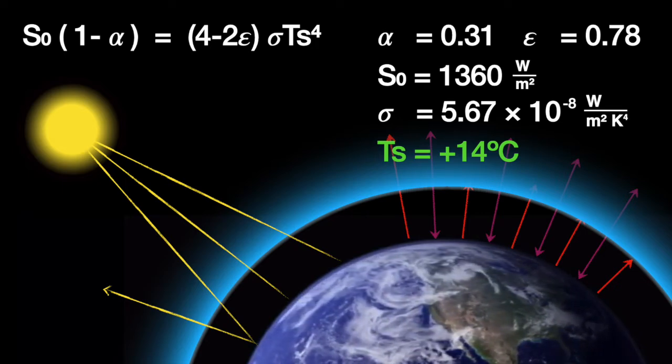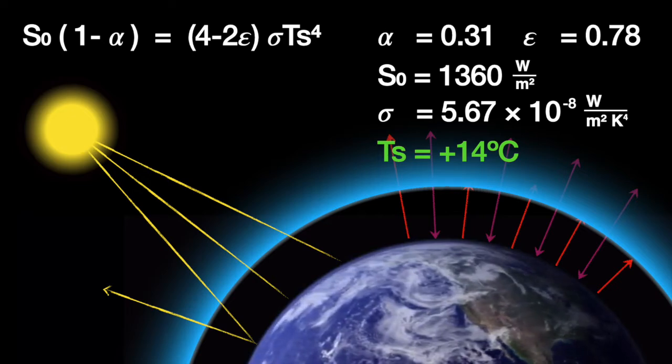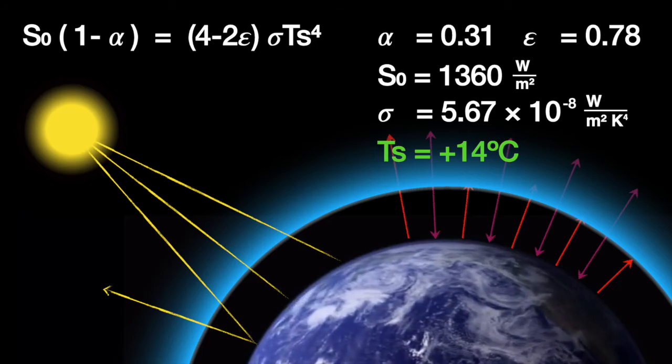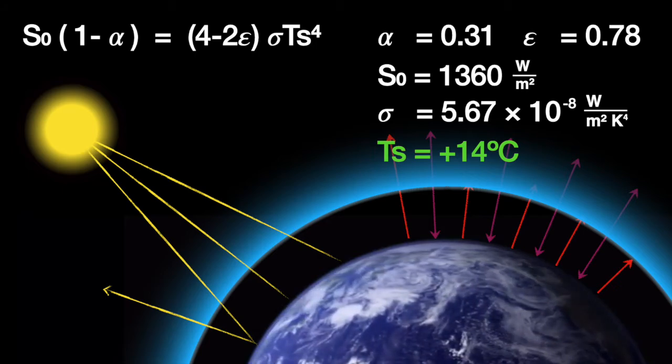This is called the single layer atmosphere model. It's very crude, but it's good enough to show that the greenhouse effect provides a plausible explanation for the Earth's warm surface. And really, it's the only explanation.